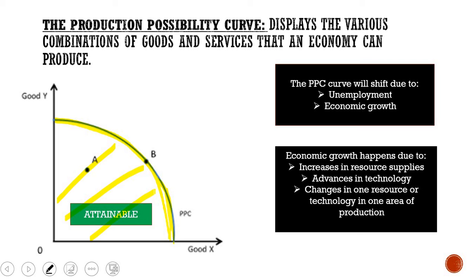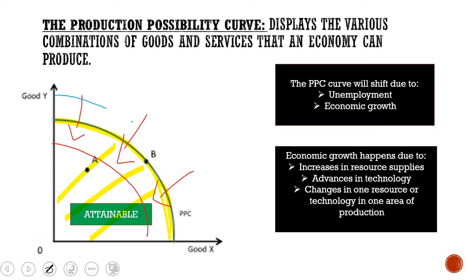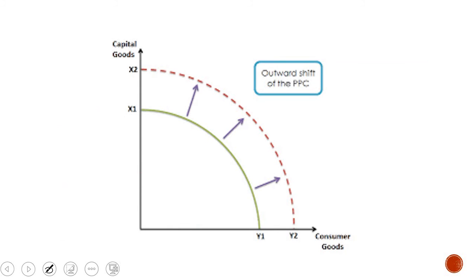Your PPC curve will shift for two reasons: unemployment and economic growth. Unemployment leads to an inward shift of your PPC curve because it is a reduction in the amount of resources — mainly labor — meaning you cannot produce that amount of goods and services. Economic growth, on the other hand, is when you have more resources in your economy, causing your PPC to shift outwards, indicating either an increase in resources or advances in technology that allow you to mass produce goods and services.